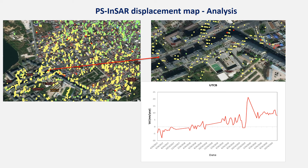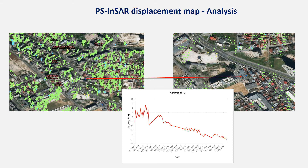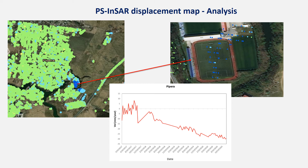Another analysis brings us back to the Cotroceni area, where subsidence is observed. Another example is located in the northern part of Bucharest.